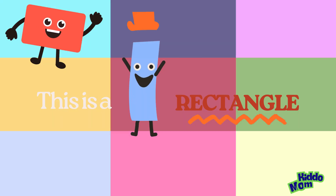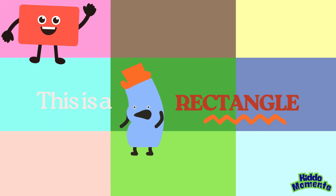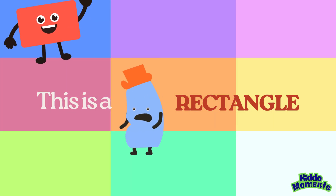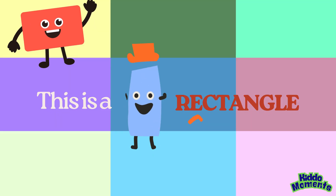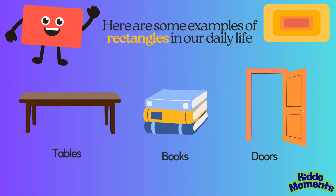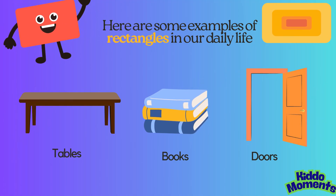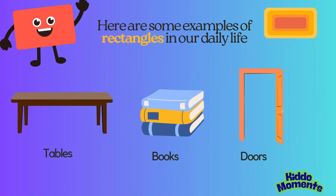This is a rectangle. A rectangle has two pairs of equal sides. Here are some examples of rectangles in our daily life.